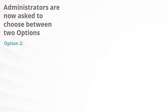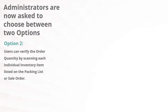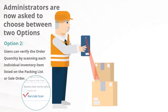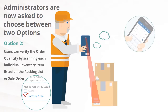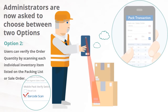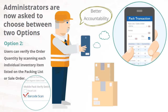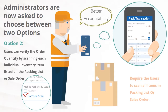With the second option, users verify the order quantity by scanning each individual inventory item listed on the packing list or sales order. This option provides better accountability than the first, since it requires the user to scan all items in the packing list or sales order.